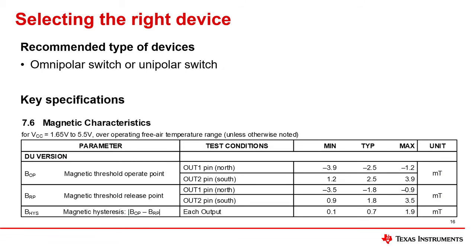Conveniently, all such devices from TI are designed with hysteresis, and the relevant specifications that define the hysteresis can be found in the magnetic characteristics table under BOP, BRP, and B-HIS in the device data sheets.